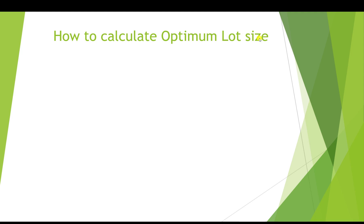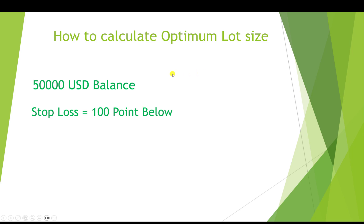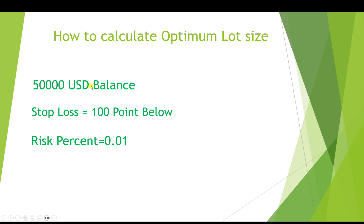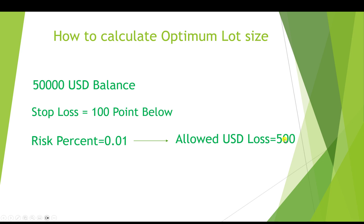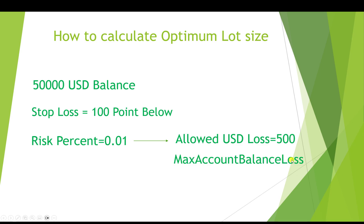So how do we calculate the optimum lot size? What does it mean? Imagine we have an account balance of $50,000 and we want to open a buy order at the current price. We want the stop loss to be 100 points below the entry point, and we only want to risk 1% of our account balance. This means when price goes 100 points below the entry point and hits the stop loss, we don't want to lose more than 1% of our balance — which is $500. I call this the maximum allowed loss, or maximum account balance loss.